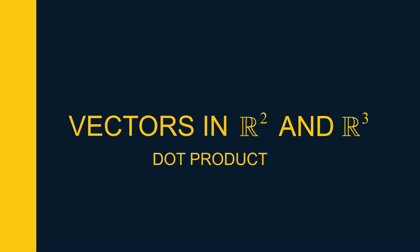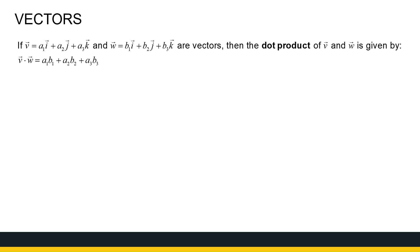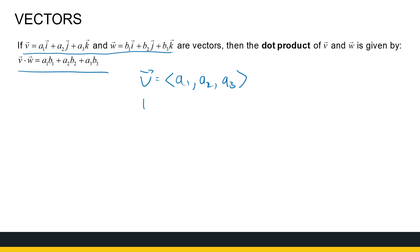We're going to be looking at the dot product of two vectors in R2 or R3. Let's get started with the definition of a dot product. The dot product between two vectors V and W, if V and W are defined as such, is given by the following formula. If I write V and W in the other notation: V equals A1, A2, A3 and W equals B1, B2, B3, the dot product is not very complicated to find.